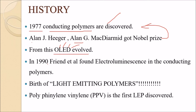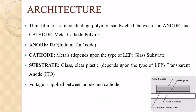In 1990, Friend et al. discovered electroluminescence in conducting polymers, marking the birth of light emitting polymers. Polyphenylene-vinylene, known as PPV, was the first LEP discovered.